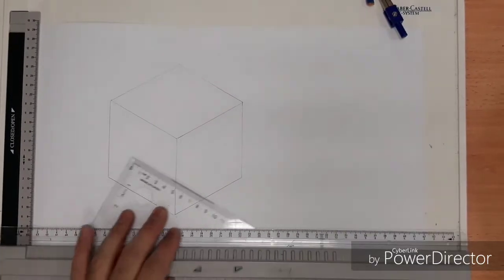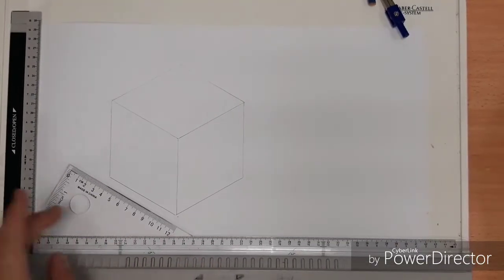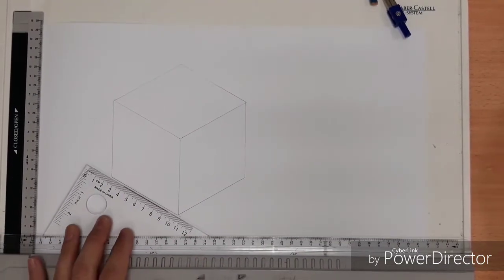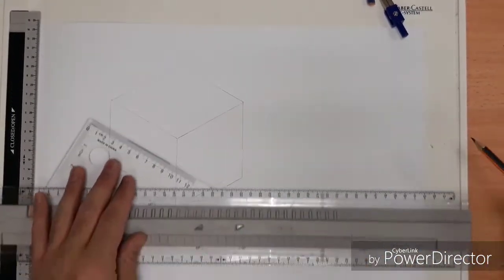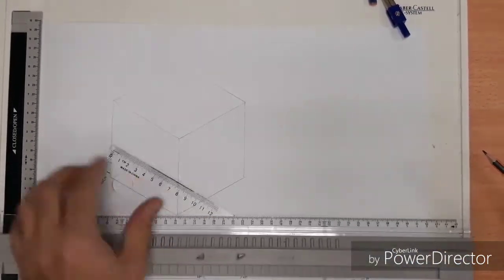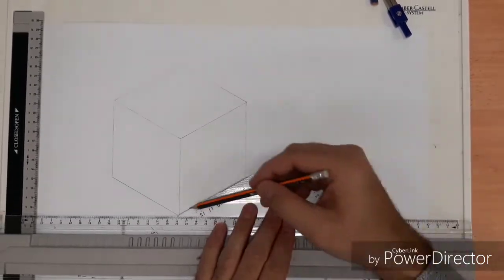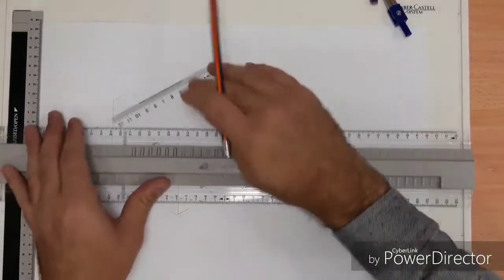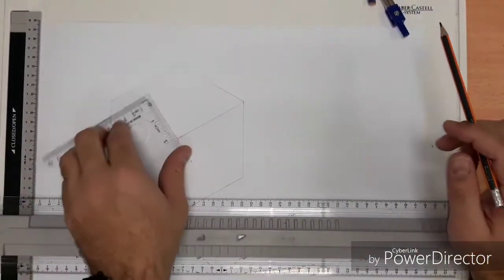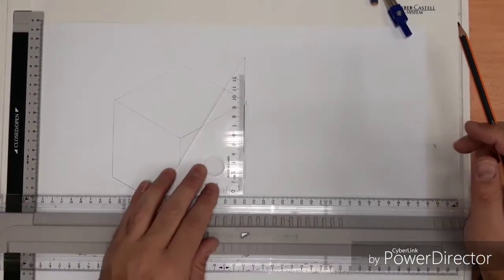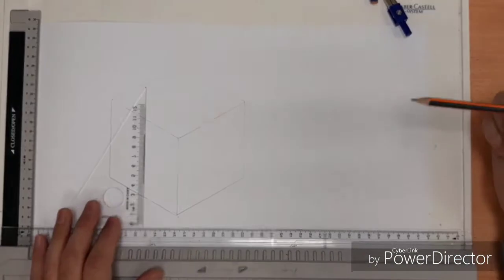I have an isometric cube drawn with the isometric set square, the 30-60 degree set square. You can see here this line and this line and this line are in this direction, this line, this line and this line are in that direction, and finally one, two and three are all in the vertical position.